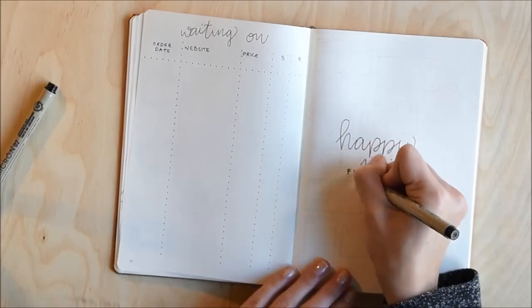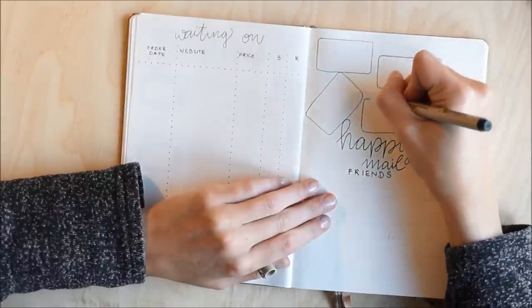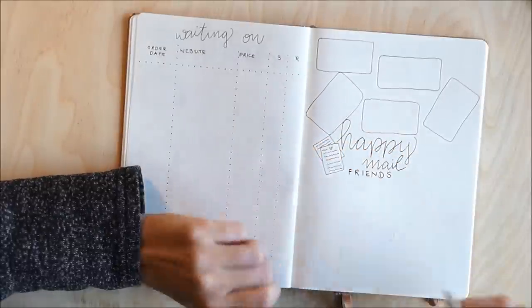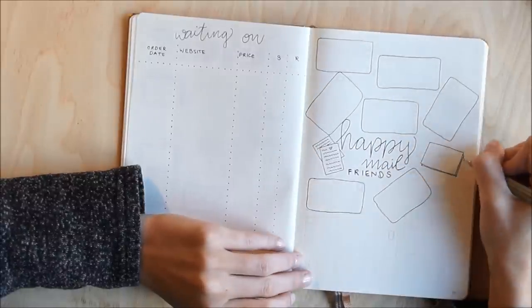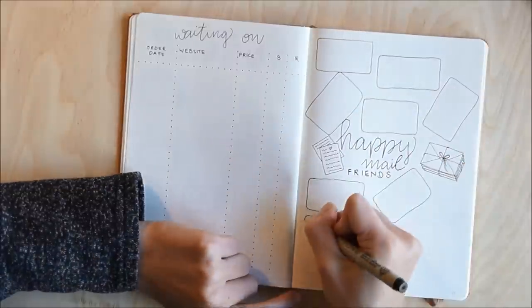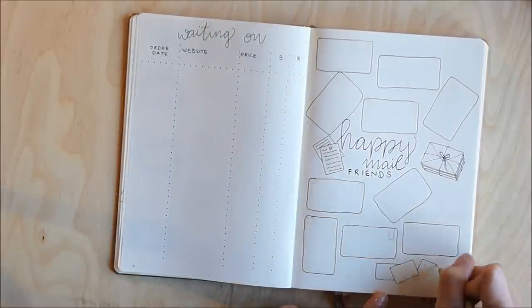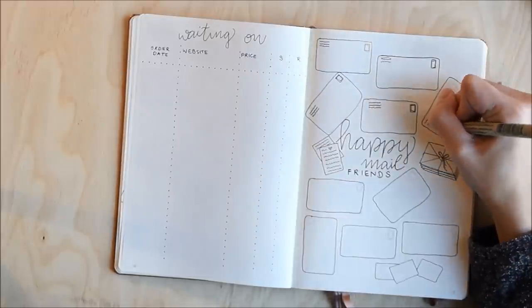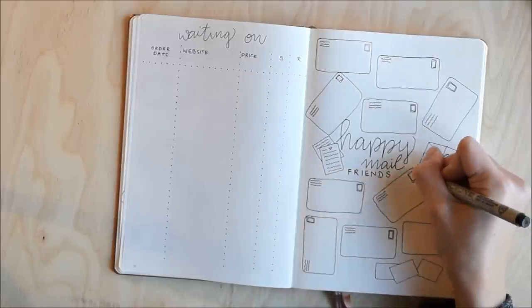And on the right side another one of my favorite spreads is a little bit of space for all those friends that I made in the planner community that I'm sending happy mail to or plan to and I'm going to fill in their addresses in the little envelopes that I drew. And I added some more decorative pieces like a love letter, a stack of envelopes, a stamp which I will be adding later on and to make those squares look like envelopes I just added some more details.